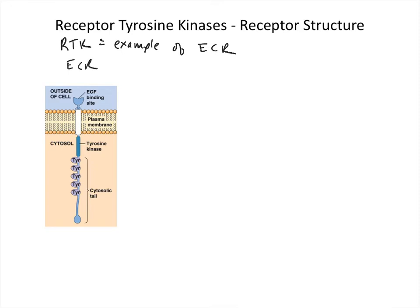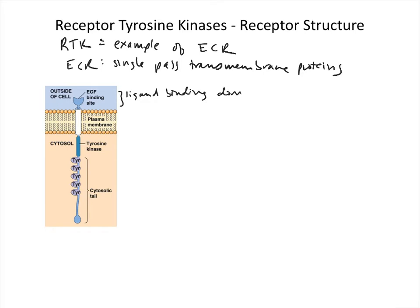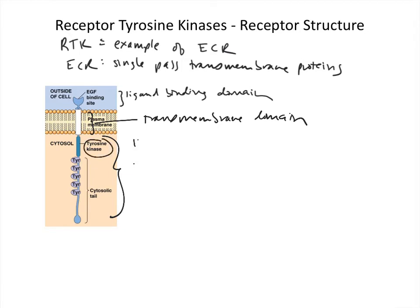Here are some shared features of enzyme-coupled receptors. They are single-pass transmembrane proteins, and they have three domains. The first is the ligand-binding domain, which faces outside the cell — it's extracellular. Second, they have a transmembrane domain. Third, they have a cytoplasmic region, which breaks down into two parts: the kinase domain, which has the enzymatic capability, and the cytosolic tail, which is the region that is phosphorylated.